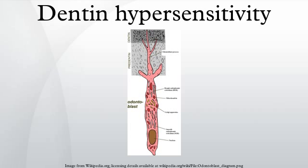The frequency and severity with which the pain occurs are variable. The main cause of dentin hypersensitivity is gingival recession with exposure of root surfaces, loss of the cementum layer and smear layer, and tooth wear. Receding gums can be a sign of long-term trauma from excessive or forceful toothbrushing, or brushing with an abrasive toothpaste, or a sign of chronic periodontitis.